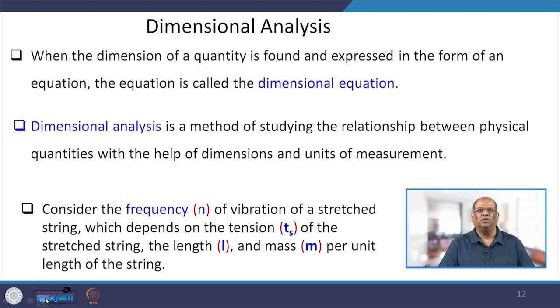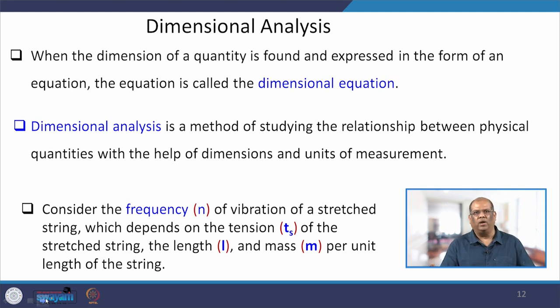Now we discuss dimensional analysis. A dimensional equation is obtained when the dimension of a quantity is expressed in equation form. Dimensional analysis is a method of studying relationships between physical quantities using dimensions and units. For example, consider the frequency of a stretched string, which depends on the tension, the length of the string, and the mass per unit length. Dimensional analysis can help find the formula relating these quantities.